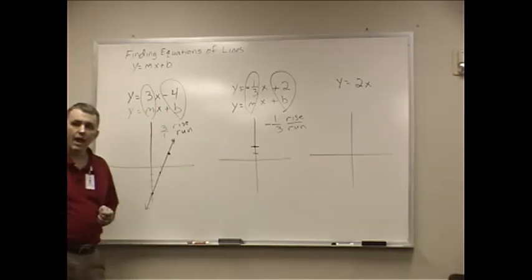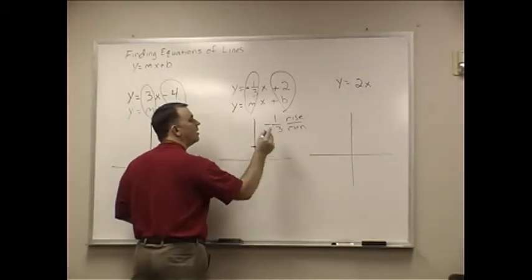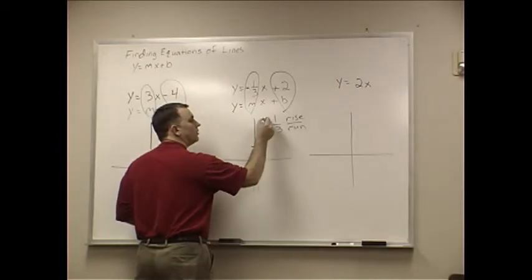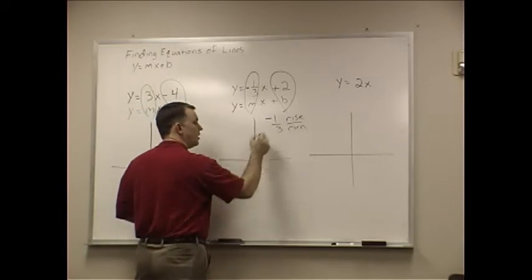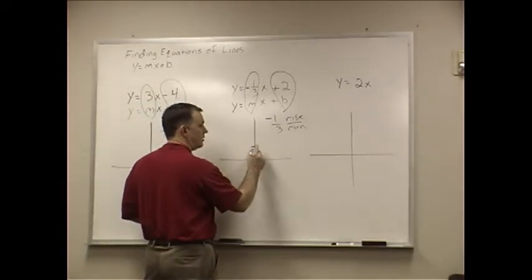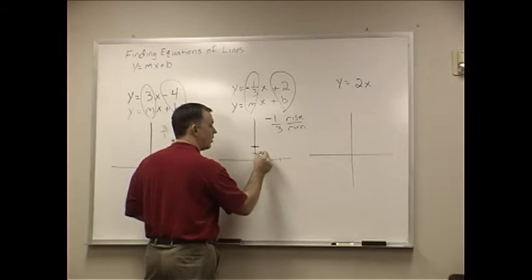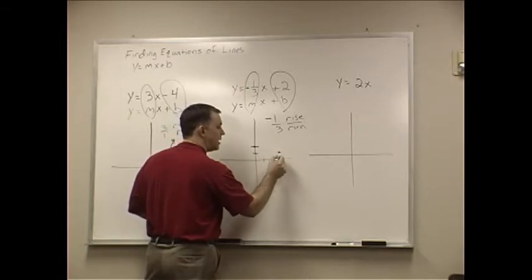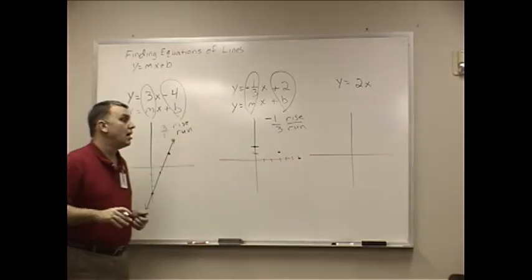Where does the negative go? I usually put it with the top. So if I'm going to do a little racing here, I'm going to move the negative up. A negative 1 rise means you go down 1 and to the right 3. So down 1, 1, 2, 3 to the right. Down 1, 2, 3. You can keep going down and over, down and over, etc. And follow through.